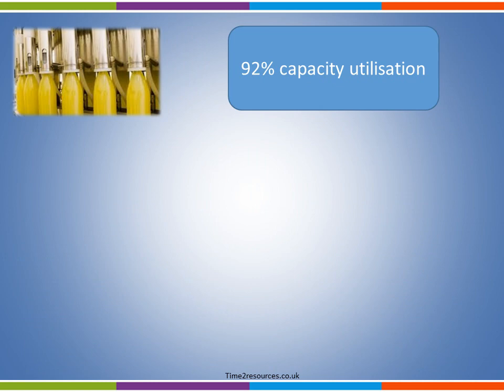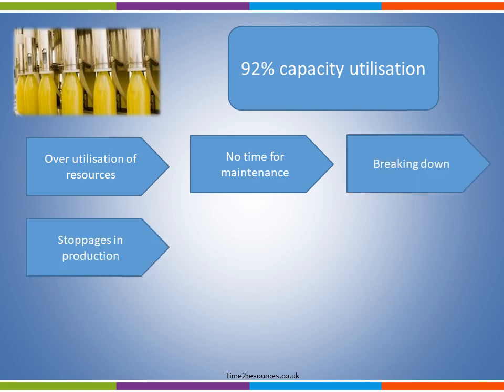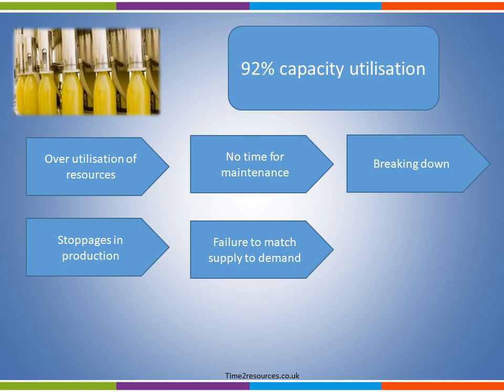There are, however, also disadvantages to having high capacity utilisation. It could result in the overutilisation of resources, meaning there is no time for maintenance and no downtime for the machines. This could lead to them breaking, which would result in stoppages in production. This would make it difficult for the business to match supply to demand, which could lead to a loss of competitive advantage. If the company's products are not on the shelves, consumers will try an alternative and may stick with that alternative in the future.